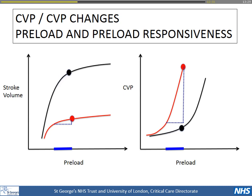On the other hand, if I'm on the ascending part of the Frank-Starling curve and I see an increase in stroke volume and cardiac output on my monitor, with no increase in CVP — or a very small increase — that is a suggestion that the patient is coping, is able to accommodate extra fluids, and the fluid challenge is successful. So for me, it's obvious that delta changes in CVP were never meant to predict changes in stroke volume and cardiac output. That's what physiology tells us.